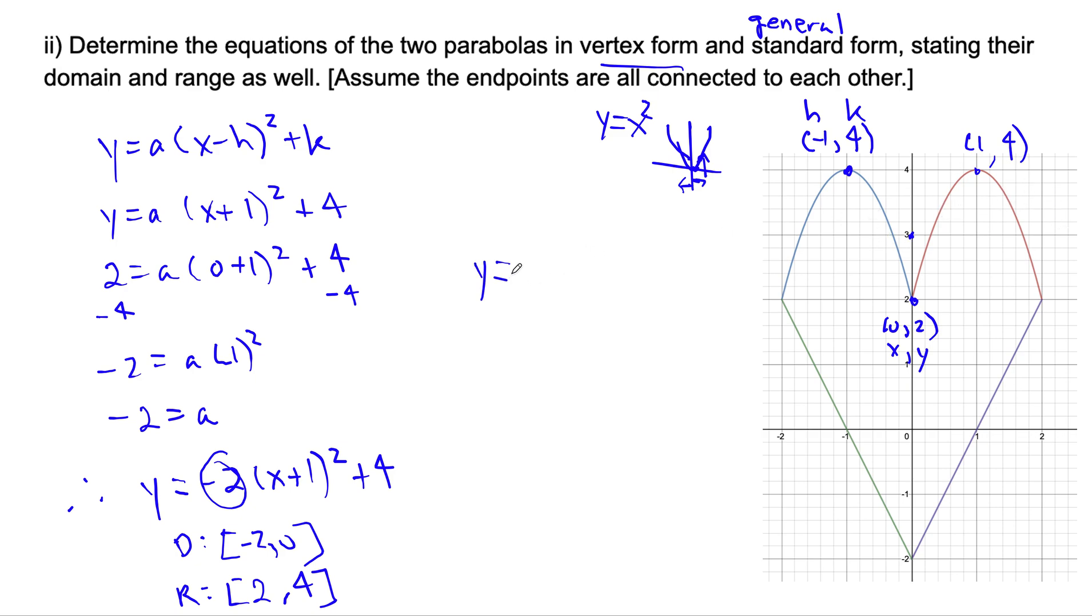You have y equals, the a is going to be the same. As you can see, it's symmetrical, it looks the same. It's -2(x - 1)² + 4, because we're moving right one, and then up four, so +4. That's the equation there. The domain really quickly is from 0 to 2 on the x-axis, and the range is from 2 to 4.